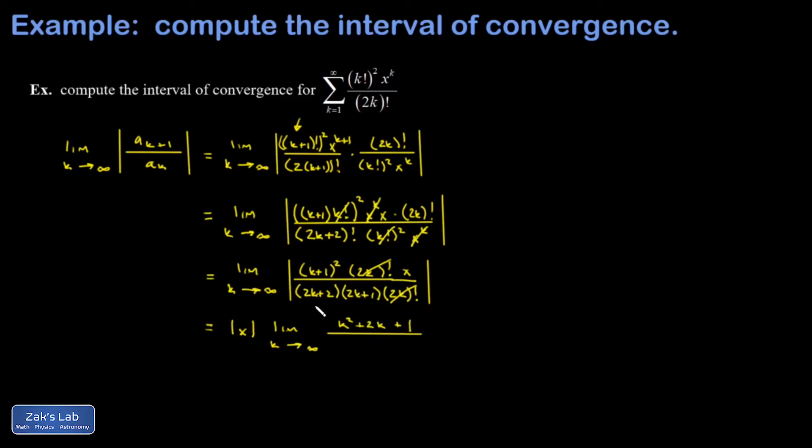In the denominator, 2k+2 times 2k+1 - expand that and you get 4k squared plus 6k plus 1.